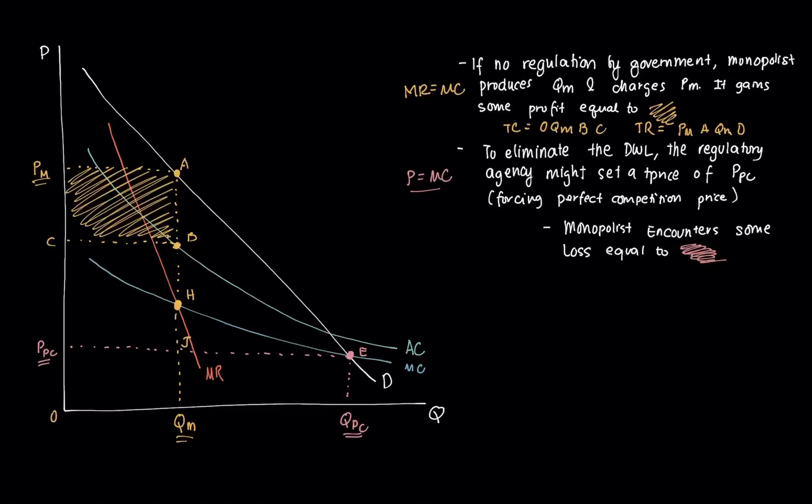The average cost is here, and PPC is below that. Therefore, there is some loss that the monopolist will have to swallow or intake because of this regulated price.